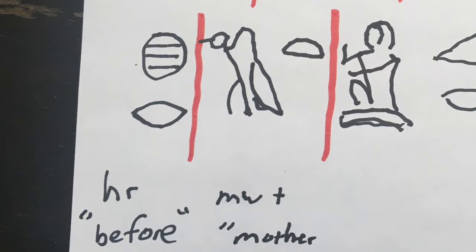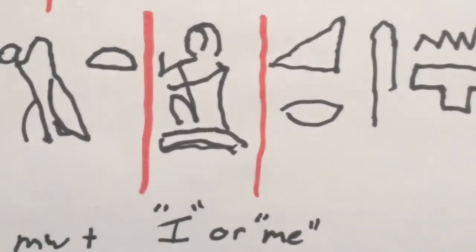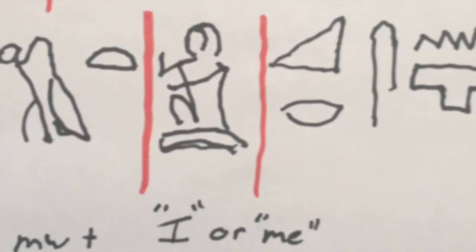After that we have "hr," which means before, followed by "muwut" — the vulture and the loaf, M-W-T — which means mother. And following that we have the sign for a man, which can mean I, me, or my. In this case, the best translation is probably going to be "my," meaning my mother, because it comes right after the word mother.